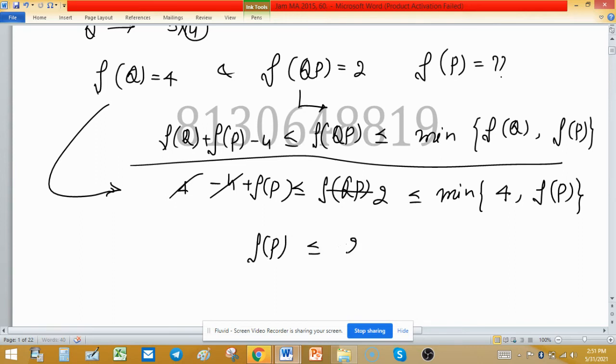So rank of P is less than or equal to 2 and less than or equal to min of 4 comma rank of P. Now we have this relation.